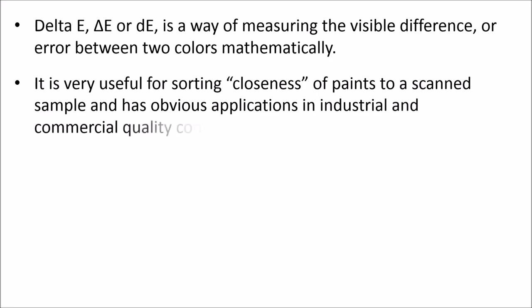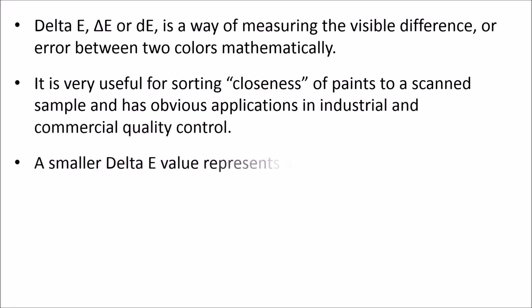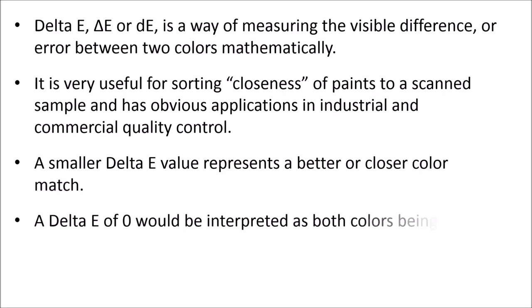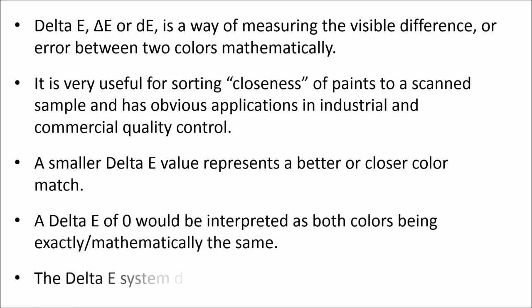A smaller delta E value represents a better or closer color match. A delta E of 0 would be interpreted as both colors being exactly — mathematically — the same. The delta E system does not have negative numbers.